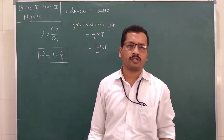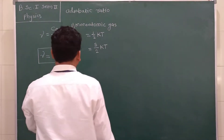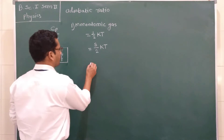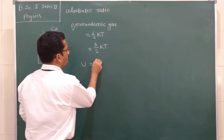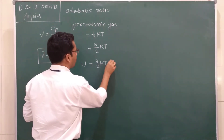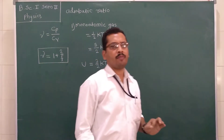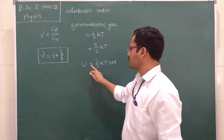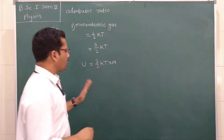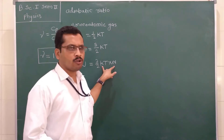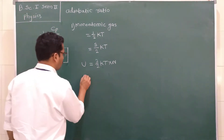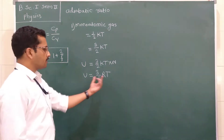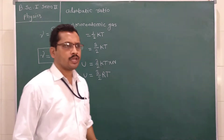If this energy is applied to one mole of gas, we must multiply this equation by Avogadro's number N. So this energy U is equal to 3/2 kT multiplied by N. Since k multiplied by N is nothing but the gas constant R, we can write U is equal to 3/2 RT. This is the total energy at temperature T.